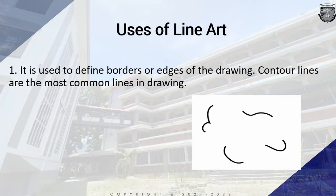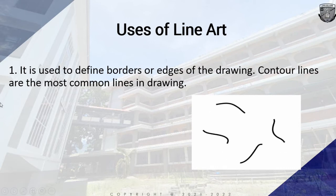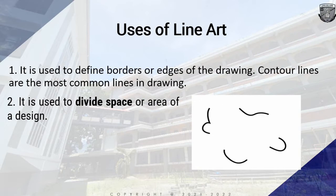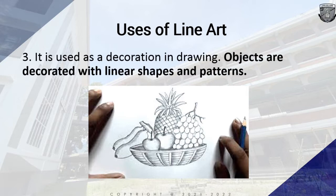Here are the uses of line art. First, it is used to define the borders or edges of the drawing. Contour lines are the most common lines in drawing — they define the different borders and edges and present the outline of the cartoon. Second, it is used to divide the space area of the design, and also used as a decoration in drawing. Objects are decorated with linear shapes and patterns. Multiple line drawings closer together produce shades of the object — these are called hatch lines or cross hatch lines.